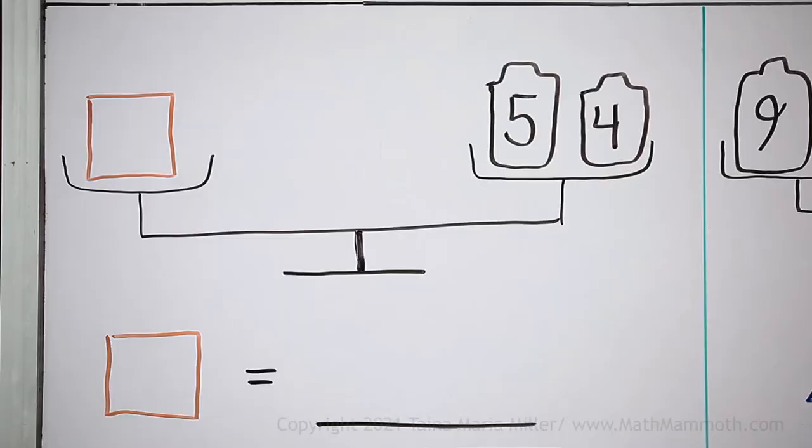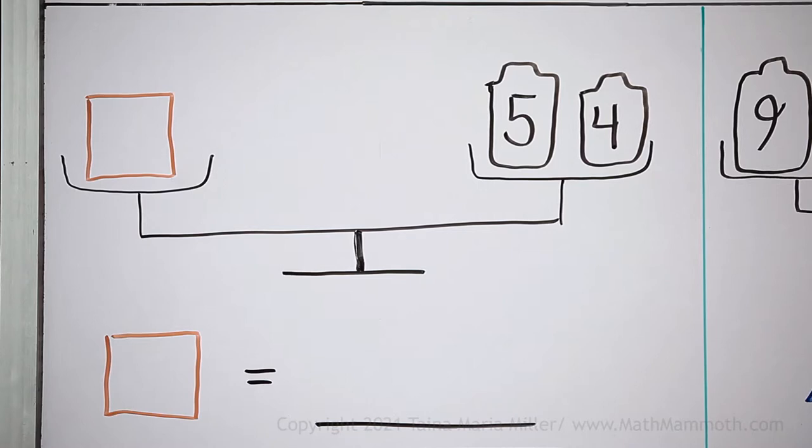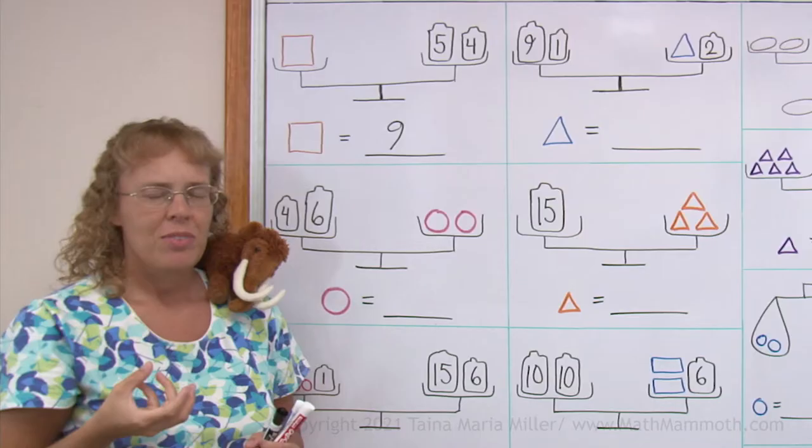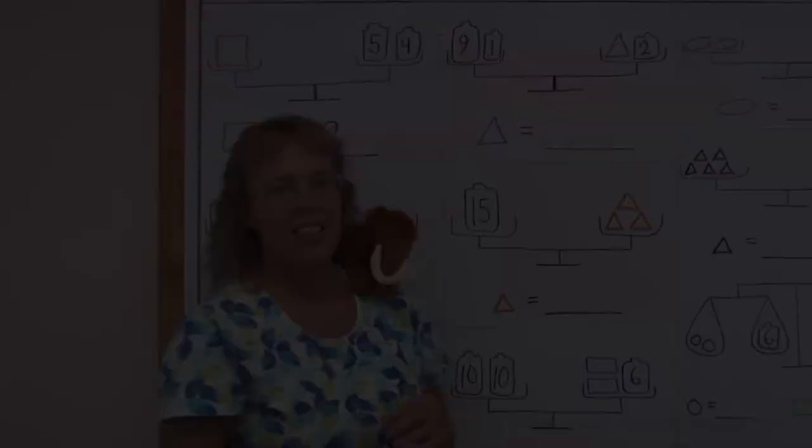Now this first one is very easy. How much does this square weigh? It's equal to 9. And this whole balance here models for us the equation. If I use x, I would say x equals 5 plus 4.